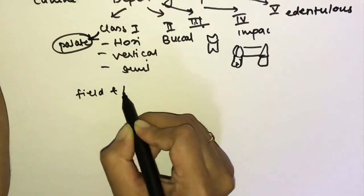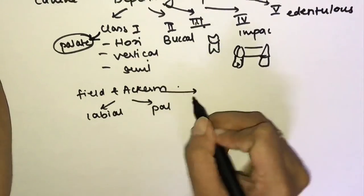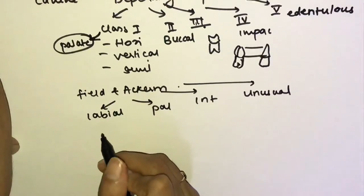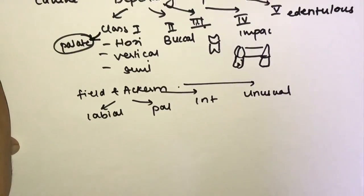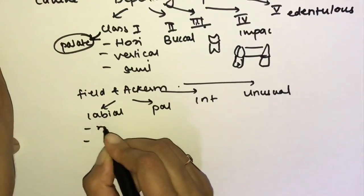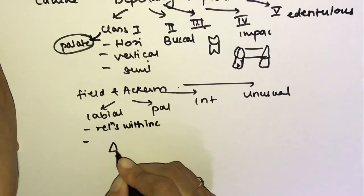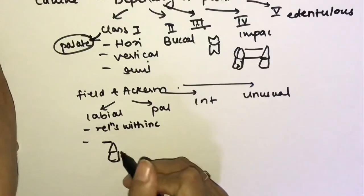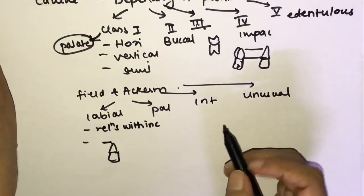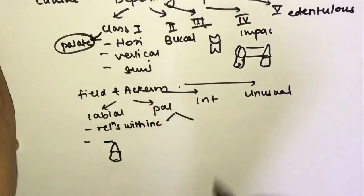Another classification by Field and Ackerman divides impacted maxillary canines into: labial position (crown in intimate relationship with the incisors, or crown well above the apices of the incisors); palatal position (crown near the surface close to the roots of the incisor, or crown deeply embedded in close relationship with the apices of the incisors).